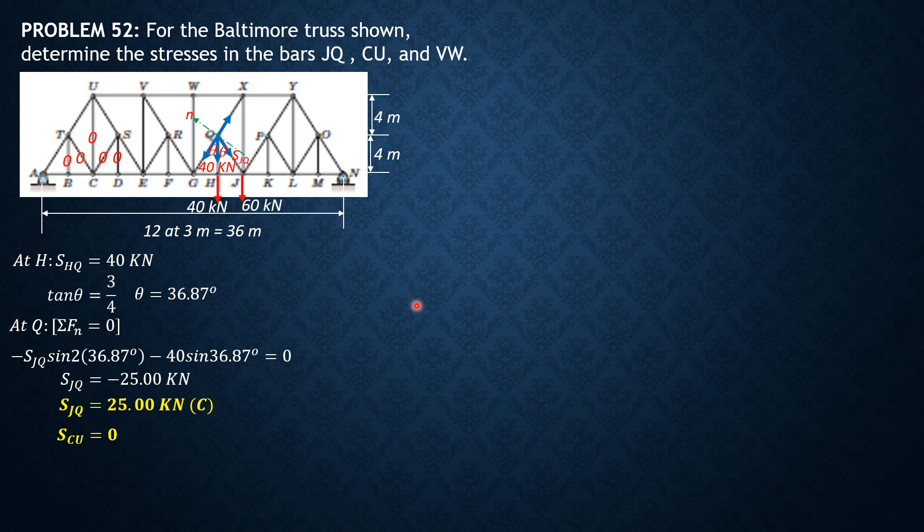Finally, we want to solve for force or stress in member VW. If we section VW, R, G, and FG, then there will be 3 members cut, and the 2 members FG and RG, which are not important here, pass through G. If we consider left of that section, all forces left of that section, then we can find stress in VW. But before that, let's compute the reactions.